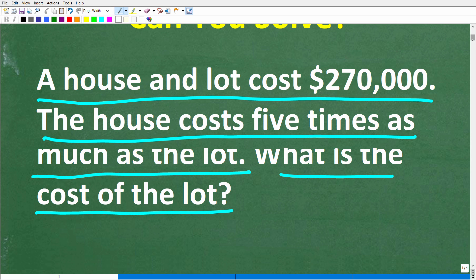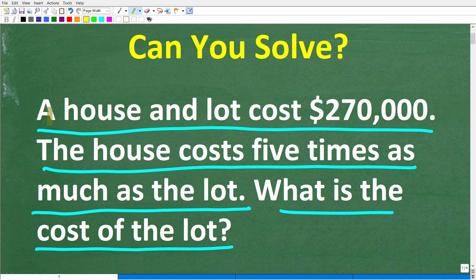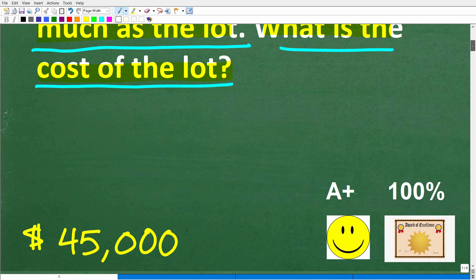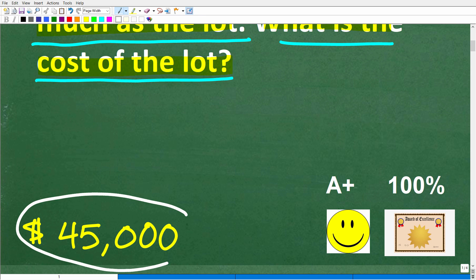Now before I show you the answer, let's take another look at the question. A house and lot - just in case you don't know what a lot is, that's the land the house is built upon. So a house and lot costs $270,000. The house costs five times as much as the lot. What is the cost of the lot? Let's take a look at the right answer. The correct answer is $45,000.